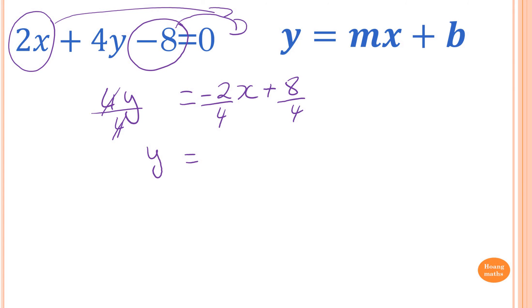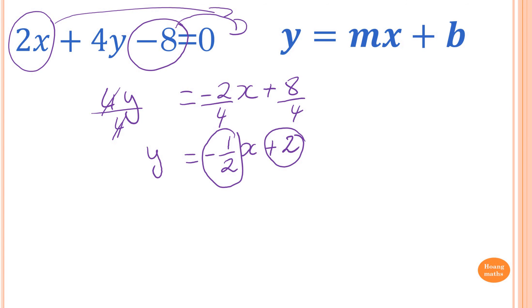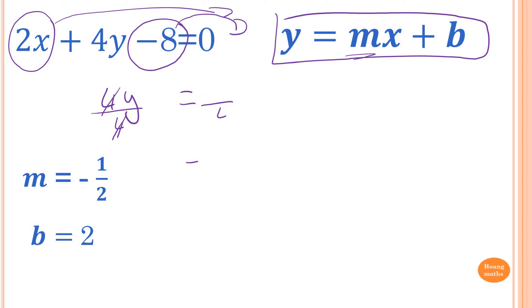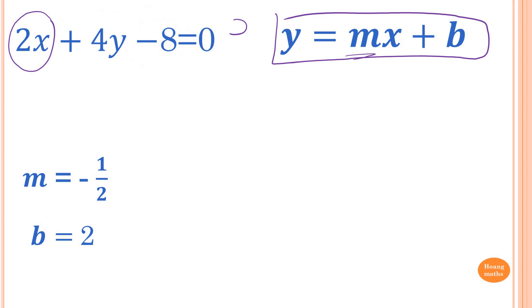Dividing by 4: y equals negative one-half x plus 2. So the gradient is negative one-half and the y-intercept is 2. That's the rearrangement into gradient-intercept form — make y the subject if it isn't already, then compare. Step one: rearrange; step two: write down the gradient which is negative one-half and the y-intercept which is 2.